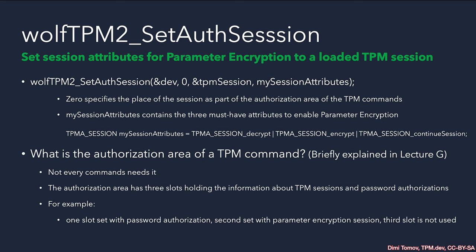The good thing is that WolfTPM takes care of managing these slots. As you saw, `wolfTPM2_SetAuthSession` lets us specify where to place the session — usually slot 0. When we set authorization using other wrapper APIs, WolfTPM automatically detects that slot 0 is occupied and uses slot 1, then slot 2 if needed. There are many `wolfTPM2_SetAuth` wrappers you can check in the documentation to understand how WolfTPM manages the different auth slots.